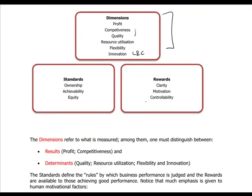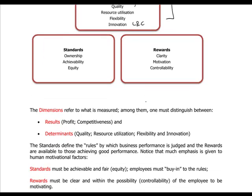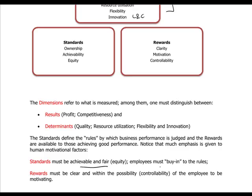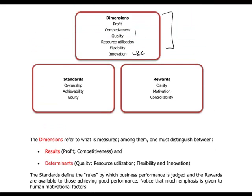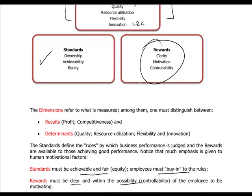Fitzgerald and Moon also sets out how standards shall be established — they must be achievable and fair, and employees must buy into these rules. Rewards must be clear and controllable by the employees. We should set standards in these dimensions, satisfying these rules and rewarding employees that reach those standards based on clarity, motivation, and controllability. Only factors that are controllable by employees shall be taken into consideration when rewarding them.